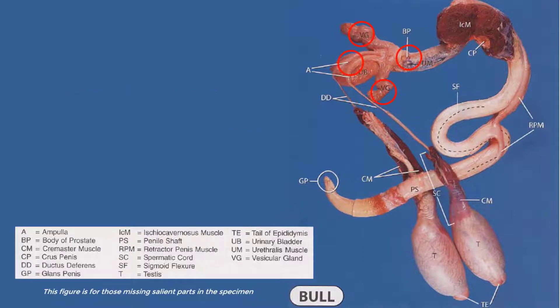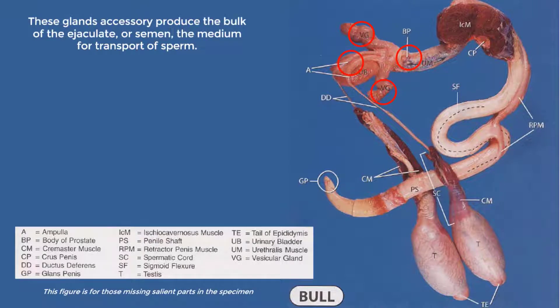Next are the accessory glands present in the bull's reproductive system. These include the ampulla of the ductus deferens, the vesicular glands, the prostate gland, and the bulbourethral gland. These accessory glands produce the bulk of the ejaculate, or semen, which is the medium for transport of sperm.